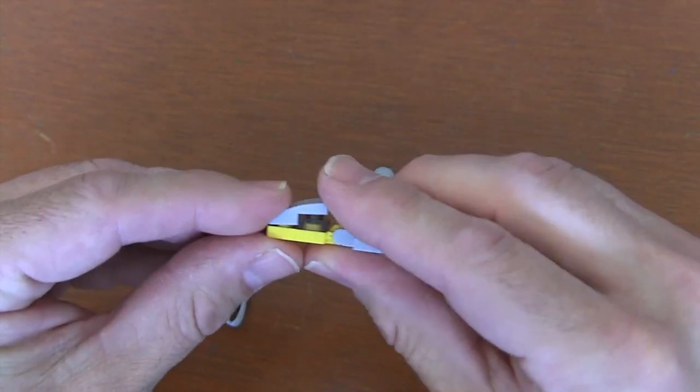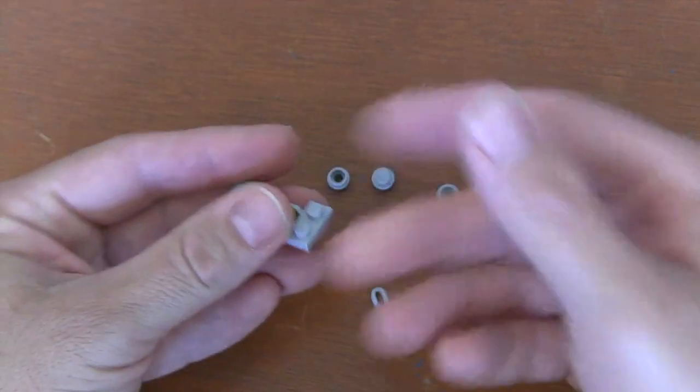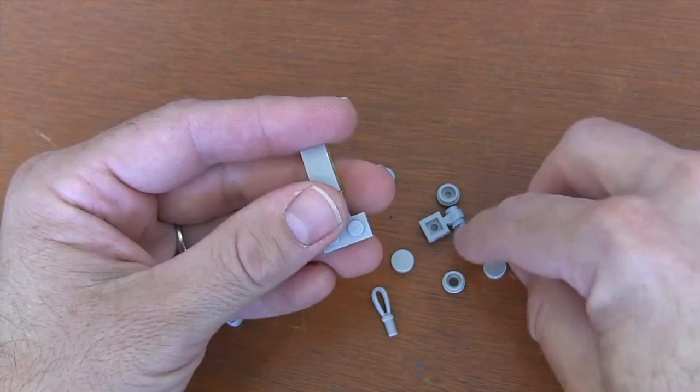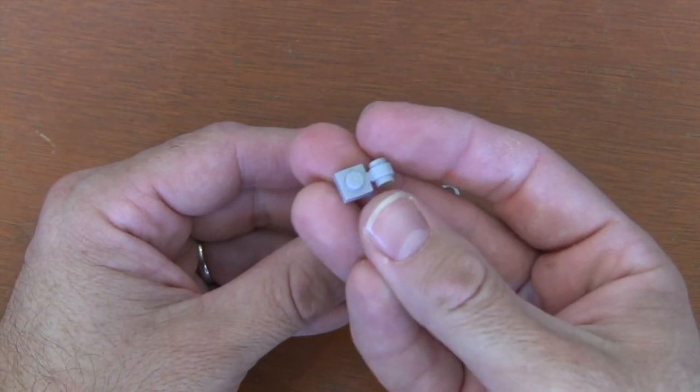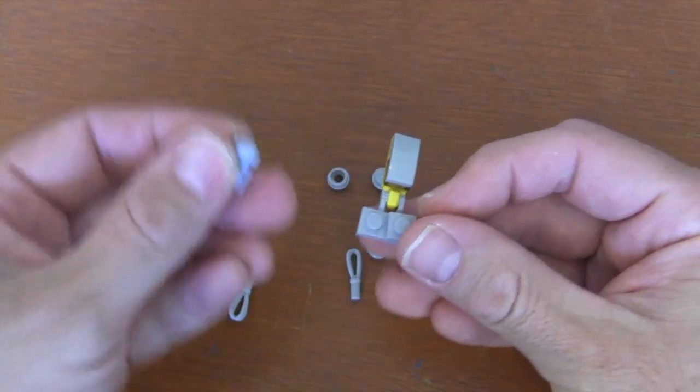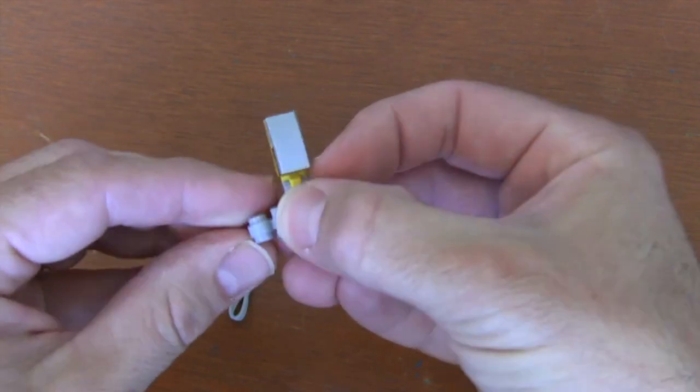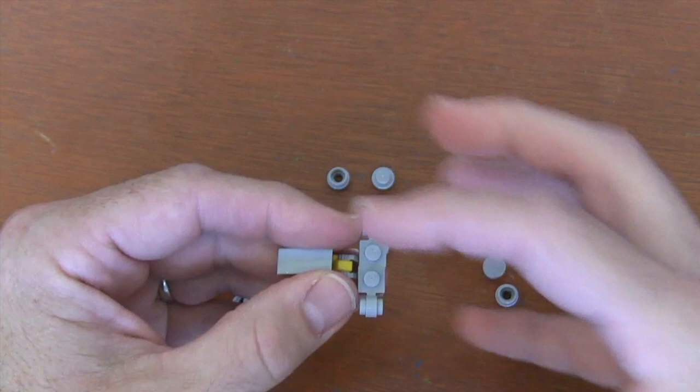Now to do the back wings that give the Y-Wing fighter its name, I'm gonna grab two of these 1x1 plates with ring and put those so they're facing out on both sides of that 1x2 plate with two fingers in light bluish gray. Now you can see how we've got the form here to start building out those side wings.